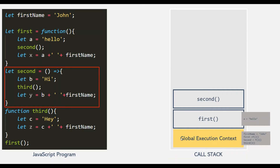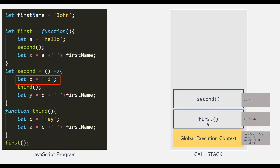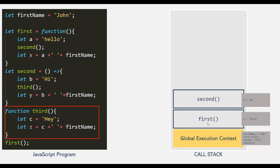Now this second execution context — the execution context of the second function — becomes the active execution context, and the execution of the first function's context pauses. Then inside the second function, we are declaring the variable b. So variable b will be stored in the execution context of the second function. And then from inside the second function, we are calling the third function. So again, the execution control will reach to the definition of the third function, and a new execution context will be created for the third function on top of the execution context of the second function.